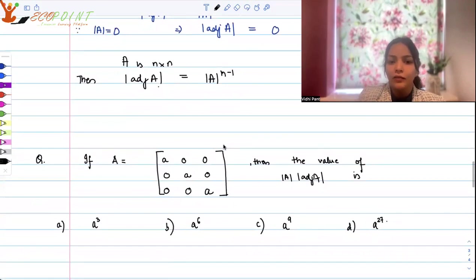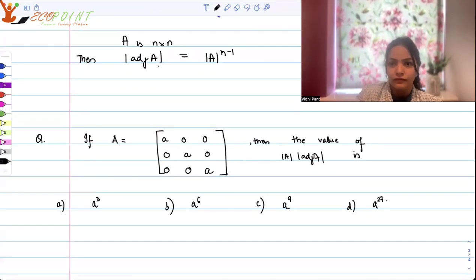So this is the property that I wanted to discuss and based on similar kind of concept let's work on another question. If A is the matrix A 0 0 0 A 0 0 0 A, that is it's a diagonal matrix as you can see, then the value of determinant A multiplied by determinant of adjoint A is A cube, A to the power 6, A to the power 9, A to the power 27. You must pause at this junction and try it out yourself. If you understood the previous question and the property then you can directly actually find out the answer here.